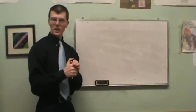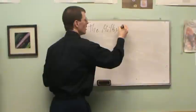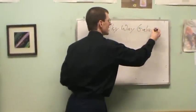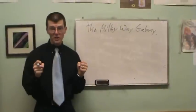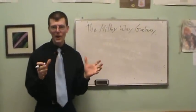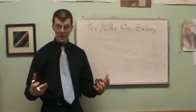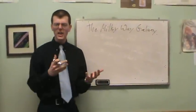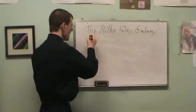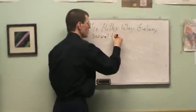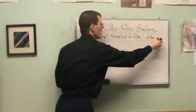Our Milky Way galaxy is an amazing place. Our solar system consists of our Sun and the planets that orbit around it — there's just one star in our solar system. The Milky Way galaxy, on the other hand, contains several hundred billion stars, all held together by gravity, all orbiting around each other. It's an enormous object.